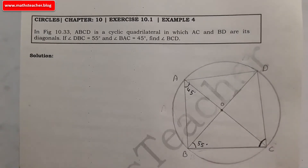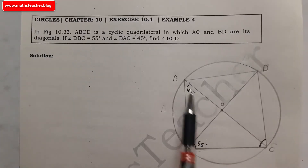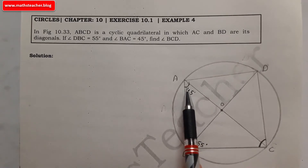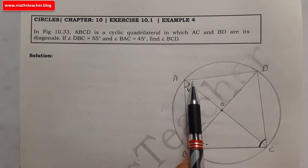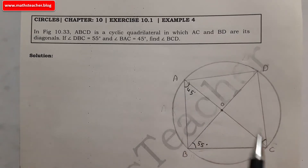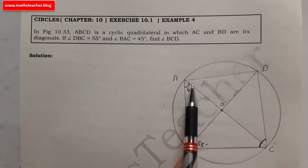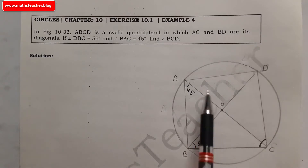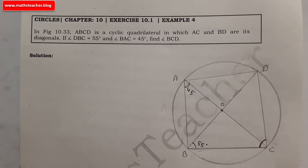The cyclic quadrilateral property we know is that opposite angles sum to 180 degrees — so angle A plus angle C equals 180 degrees. We know 45 degrees; if we find this angle, we can use that to find the other angle. From 180 degrees we will find the missing angle.